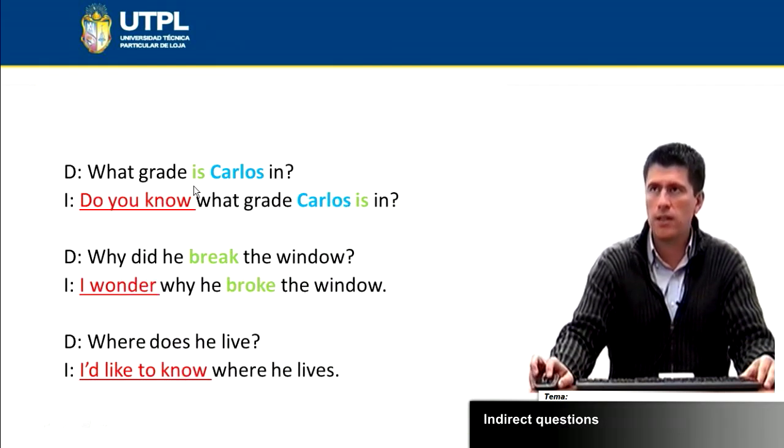In the direct question, I have the verb before the noun. In the indirect question, I have the noun and then the verb. So, remember, when you use do you know, you're going to end this question with a question mark.